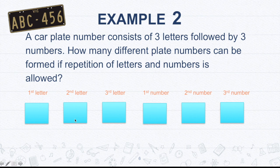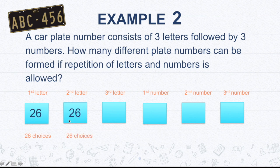So the first three are for the letters and the next three would be for the numbers. Let's start with the first three letters. So if repetition is allowed and how many letters do we have in the English alphabet? We have 26. So for example, if this is A, then the second letter can also be A, so giving us the same thing, 26 choices as well. And if this is A, second letter is A, so third letter can also be A. So that means we have 26 choices.